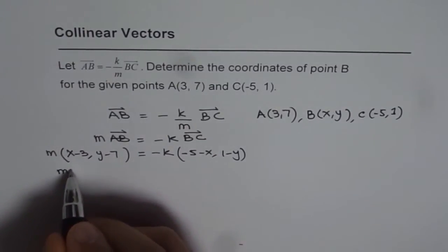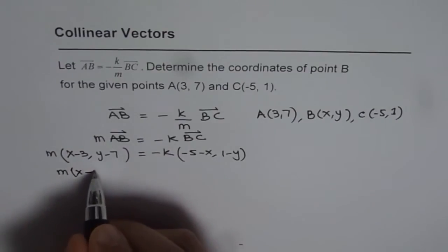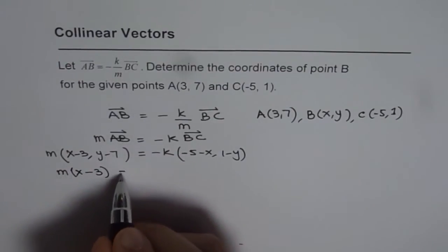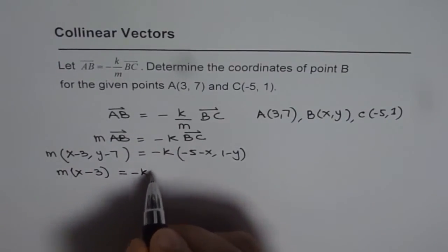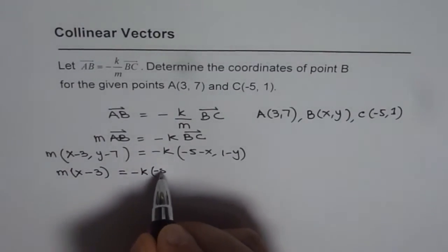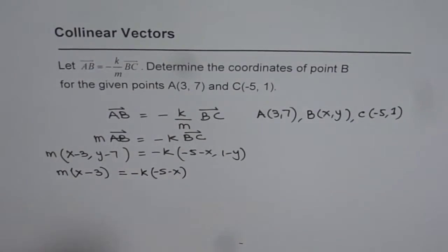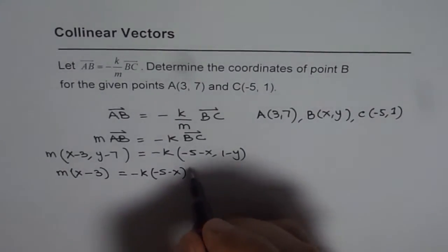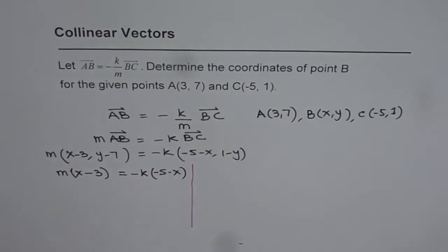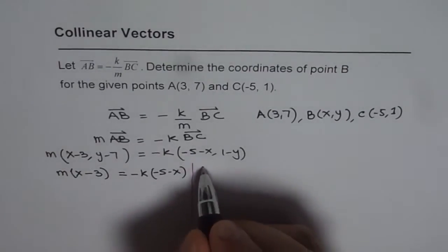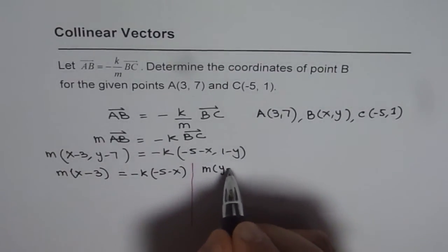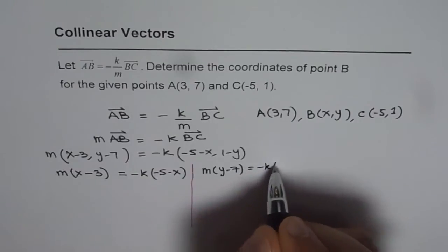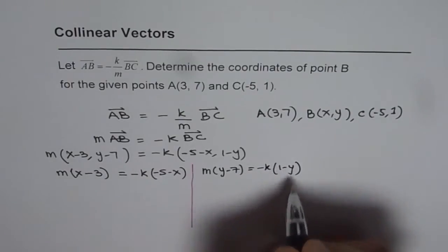M(X minus 3) equals minus K times (-5 minus X). And for Y terms we can write the second equation: M(Y minus 7) equals minus K times (1 minus Y).